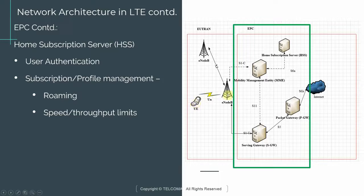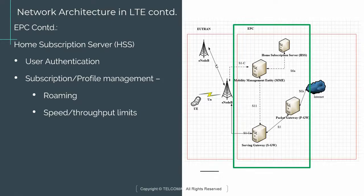When a UE attaches to the network and gets registered in the MME, the HSS sends that profile information to the MME. The MME then becomes aware of the UE's max throughput and any roaming restrictions, and makes sure those are respected by other network elements like the EUTRAN. That's the function of the HSS.